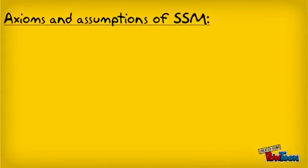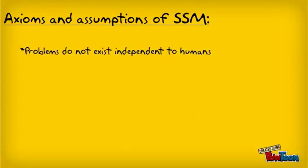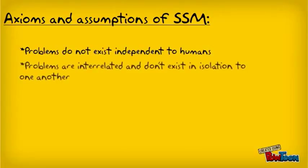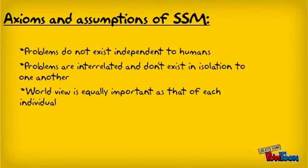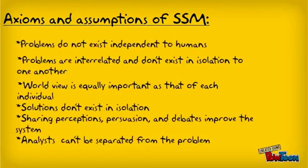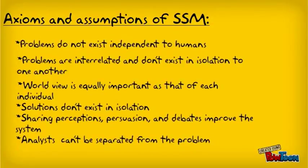Some of the axioms and assumptions of Soft Systems Methodology are as follows: Problems don't exist independent of humans. Problems are interrelated and don't exist in isolation to one another. The world view is equally as important as that of each individual. Solutions to the problems don't exist in isolation. Sharing perceptions, persuasion, and debate result in improvements of the system. And analysts cannot be separated from the problem.